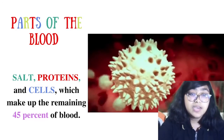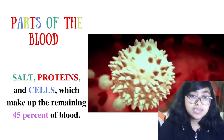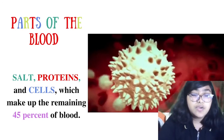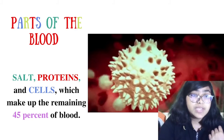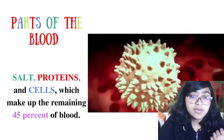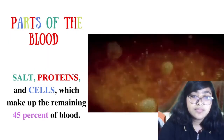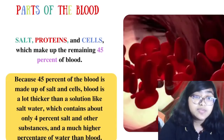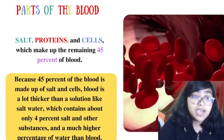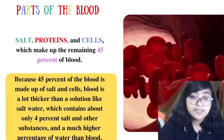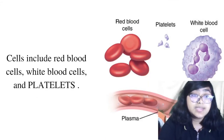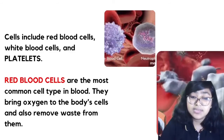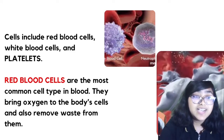White blood cells are the fighters of your body — they fight disease and infection. Salt, protein, and cells make up the remaining 45 percent of blood. Blood is much thicker than a simple solution like salt water. The cells include red blood cells, white blood cells, and platelets.